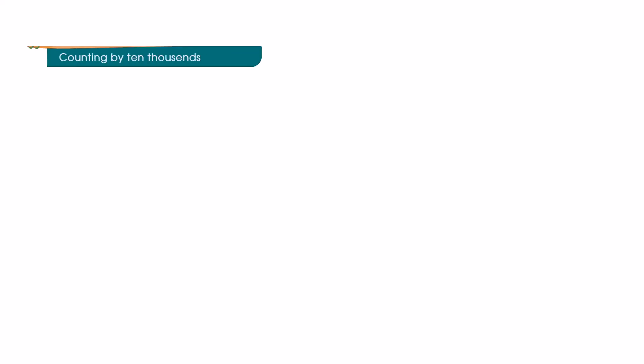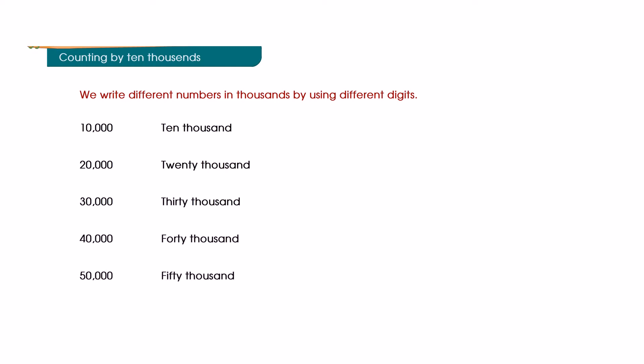Counting by ten-thousands: We write different numbers in thousands by using different digits. Ten-thousand, Twenty-thousand, Thirty-thousand, Forty-thousand, Fifty-thousand, Sixty-thousand, Seventy-thousand, Eighty-thousand, Ninety-thousand, One Lakh.